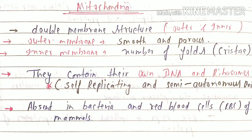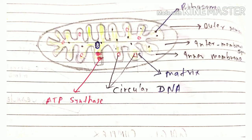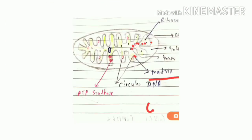Mitochondria is a double membranous structure, meaning both an outer membrane and an inner membrane are present. The outer membrane is smooth, while the inner membrane is folded. The folding of the inner membrane is known as cristae. The outer membrane is porous — it has small pores present in it.